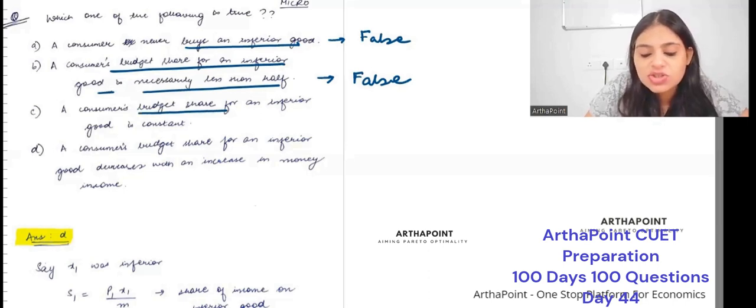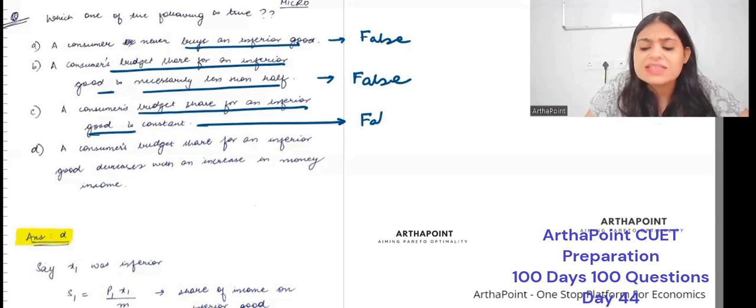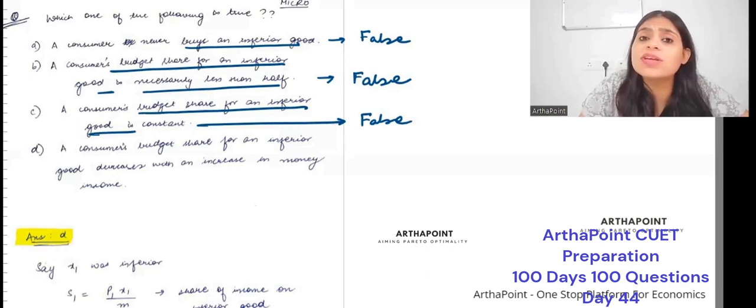A consumer's budget share for inferior good is constant, not necessarily the case. As my income changes, the share of my money that I spend on inferior good can change. So it's incorrect.